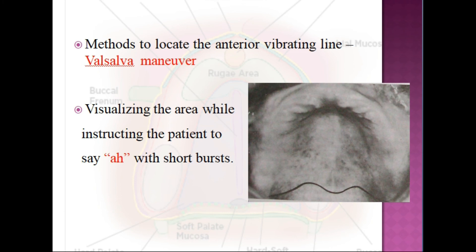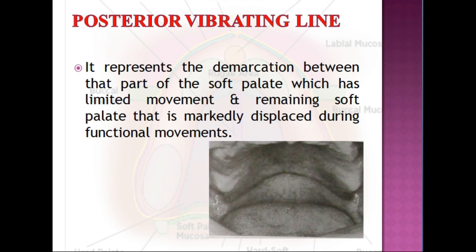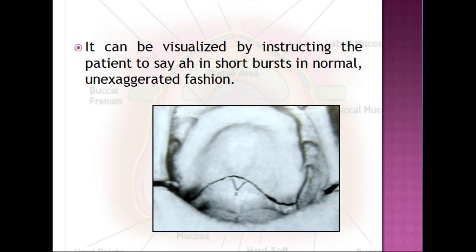The Valsalva maneuver is performed by asking the patient to blow through the nose while closing the nostrils during recording. The posterior vibrating line is recorded by instructing the patient to say 'ah' in short bursts in a normal, unexaggerated manner. The posterior vibrating line is an imaginary line at the junction of the aponeurosis of the tensor veli palatine muscle and the muscular portion of the soft palate.